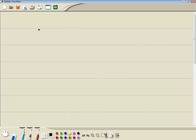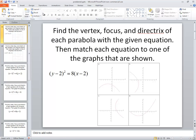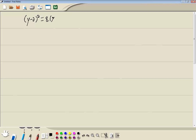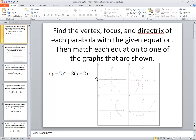So we got y minus 2 squared is equal to 8 times x minus 2. And we'll start off finding vertex, focus, and directrix and then get the graph and see which one matches.